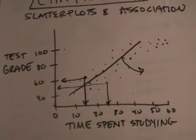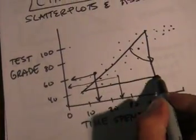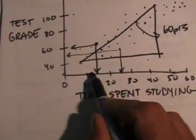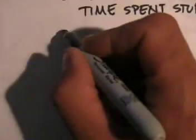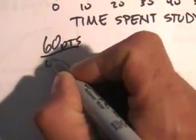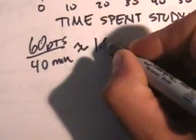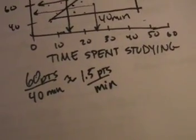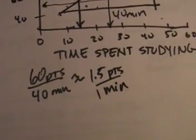The way we're going to find the equation for this line is the way we used to. We're going to say, what's the slope? The rise over the run. The rise here — from about 40 to 100 — is 60 points. The run is from about 10 minutes to about 50 minutes, so about 40 minutes. The slope is 60 points over 40 minutes, which is about 1.5 points per minute. For every minute you studied, your grade went up about 1.5 points.